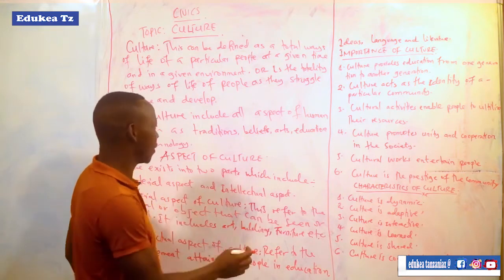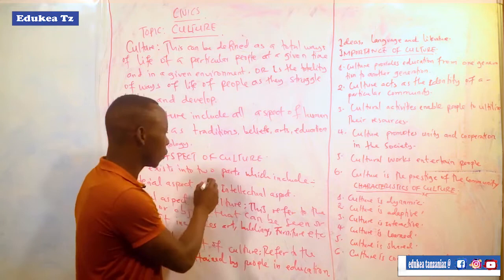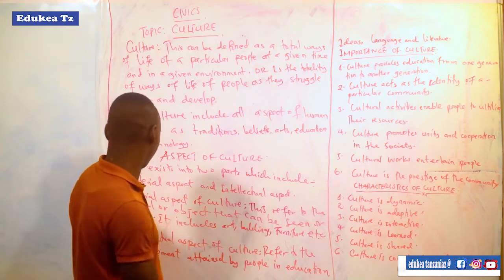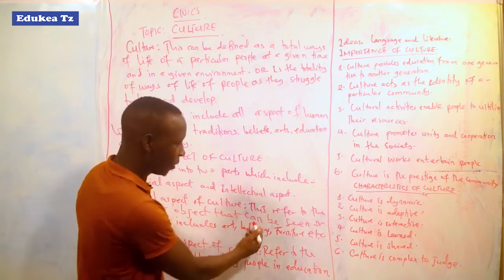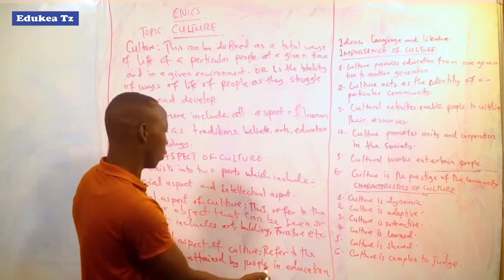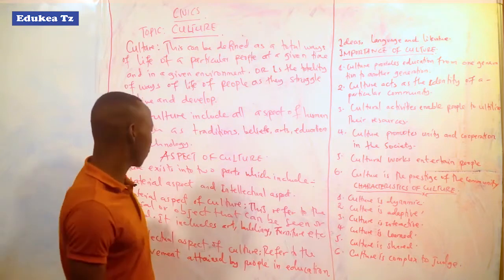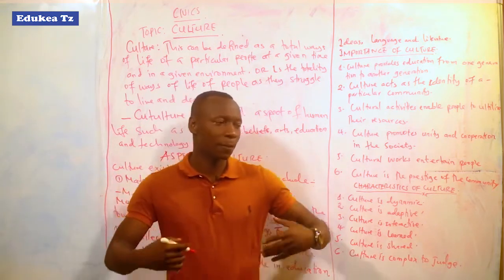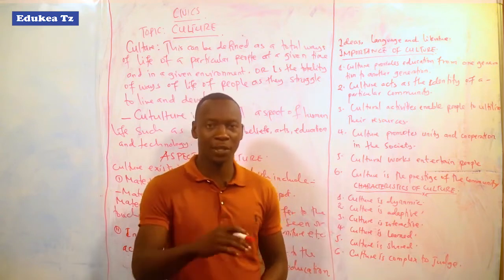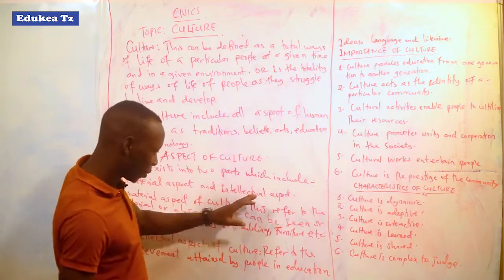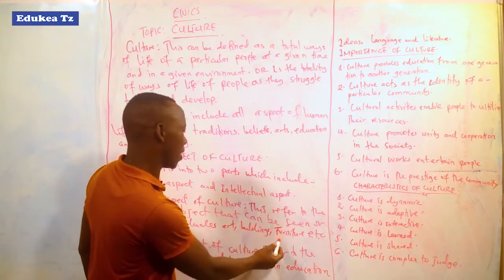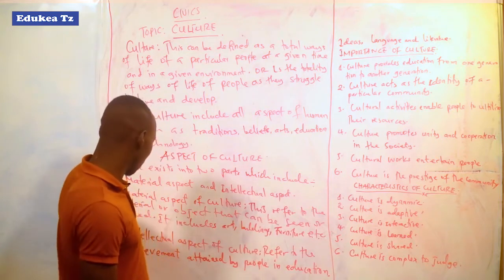After looking at the aspects of culture, culture exists in two parts: the material aspect and the intellectual aspect. The material aspect of culture refers to material objects that can be seen with the naked eye or can be touched. It includes arts, beliefs, furniture, and so on. That is all about material culture.